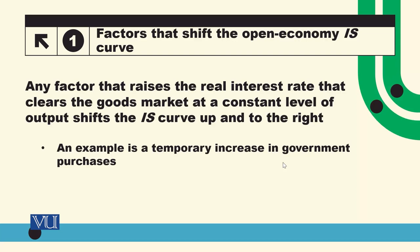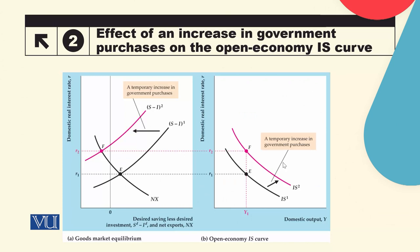An example is a temporary increase in government purchases, which will shift the IS curve up and to the right. This is the initial net export curve and this is the saving and investment curve. The S-I curve is positively sloped and the NX curve is negatively sloped. The intersection point is the equilibrium of the goods market, at interest rate R1 and output Y.